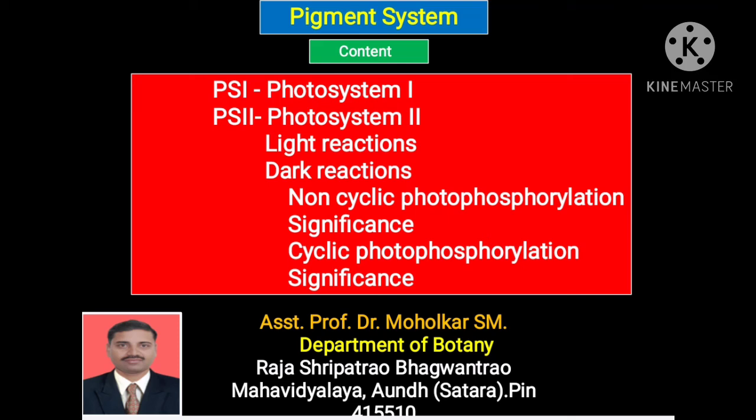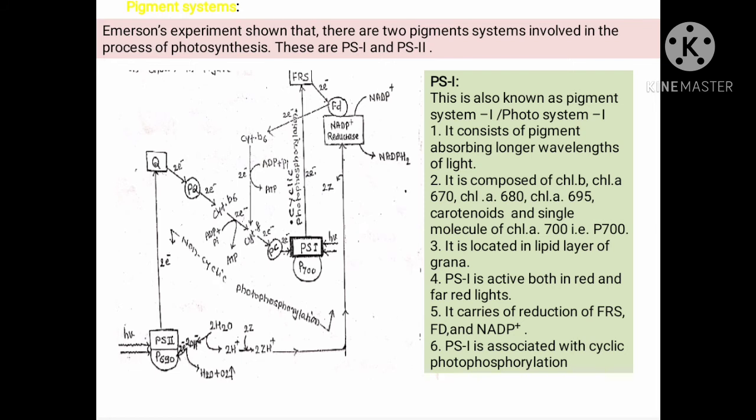Good morning. Today we will see the pigment system. Under the pigment system we will see photosystem first, photosystem second, light reactions, dark reactions, non-cyclic photophosphorylation and their significance, and cyclic photophosphorylation and their significance. The Emerson experiment showed that there are two pigment systems involved in the process of photosynthesis: photosystem first and photosystem second, or PS1 and PS2.